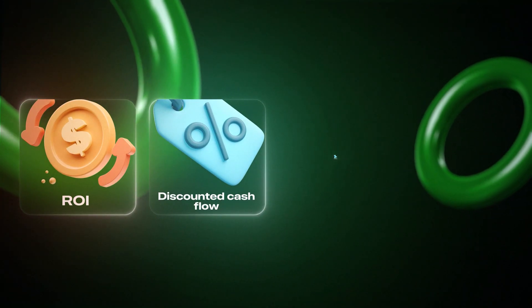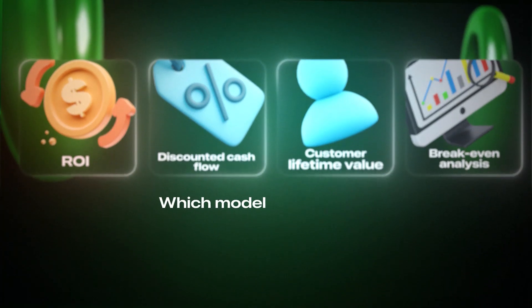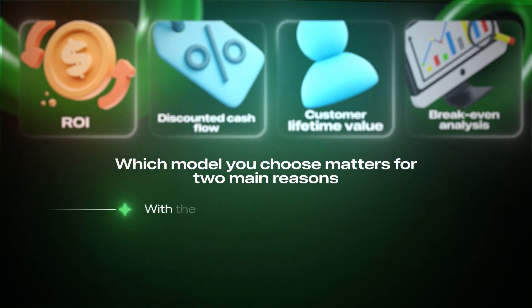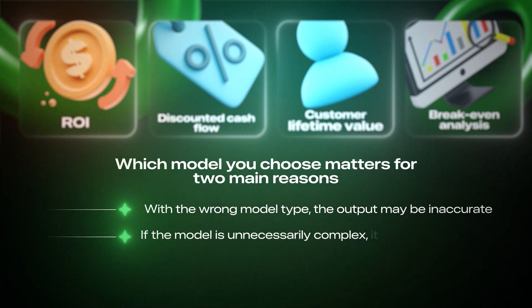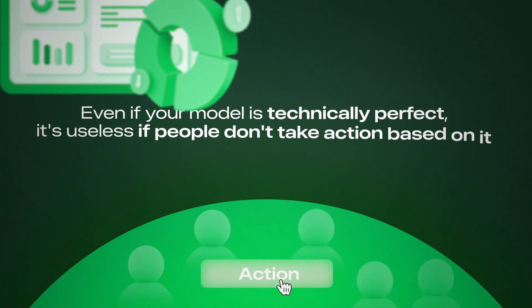There are several model types that FP&A commonly uses: ROI models, discounted cash flow models, customer lifetime value models, and break-even analysis. Which model you choose matters for two main reasons. First, with the wrong model type, the output may be inaccurate — certain models are great for specific cases but poor matches for others. Second, if the model is unnecessarily complex, it likely won't get buy-in from other departments, even if your model is technically perfect. It's useless if people don't take action based on it. A financial model makes a recommendation, and you need people from other departments to agree with that recommendation. If you always use the most complex model type for simple decisions, people may not have the patience to understand how it works, and they'll be less likely to trust the output.